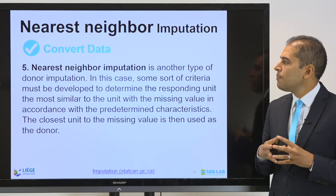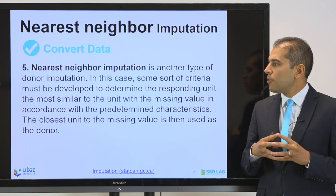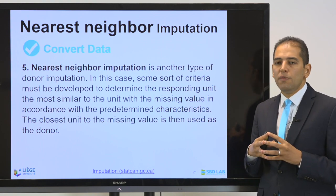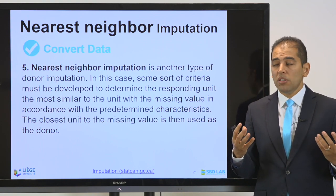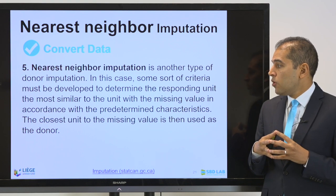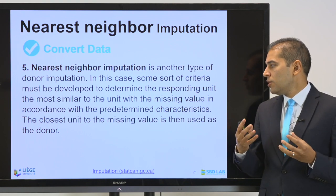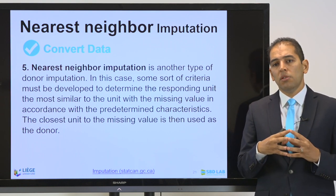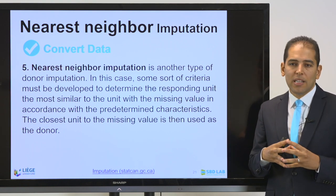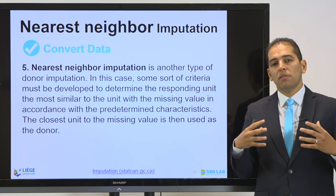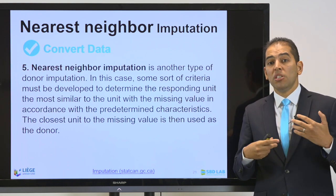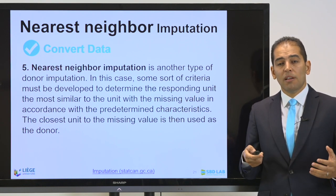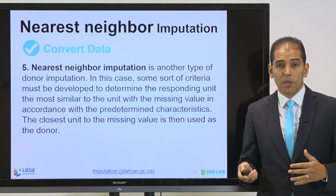The last type is nearest neighbor imputation — another type of donor imputation. Here, some criteria must be developed to determine the responding unit most similar to the unit with the missing value, based on predetermined characteristics. The closest unit to the missing value is then used as the donor. All imputation information needs to be described as part of your dataset when preparing and inspecting your data.